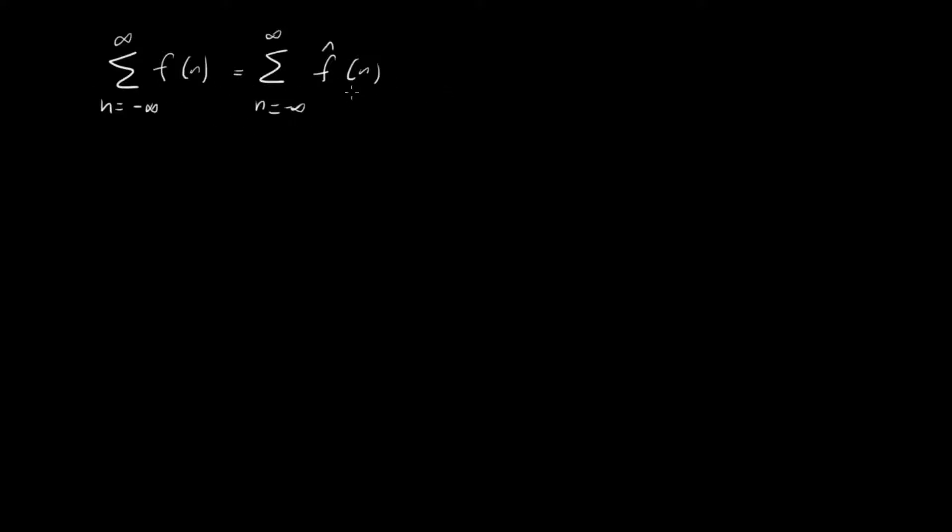This is kind of pretty shocking, right? If you define some grid on some function f of n and you add up all those points on that grid, it's the same thing in Fourier space. That's pretty surprising, but how do we actually show that this is true?